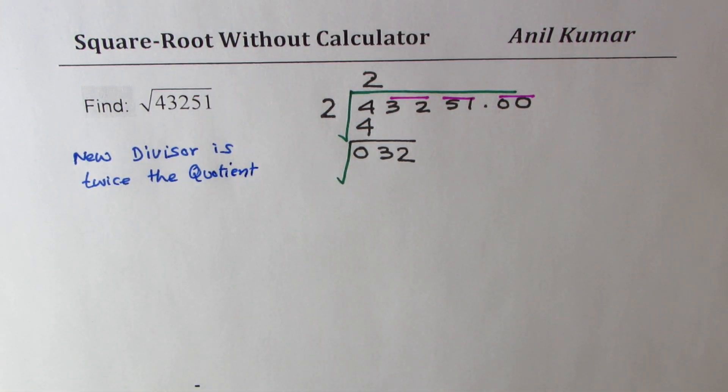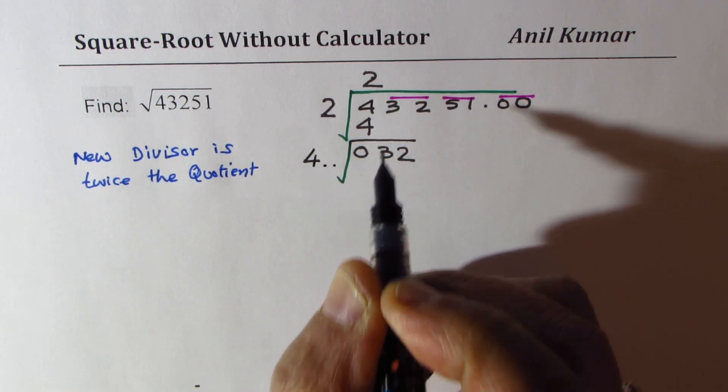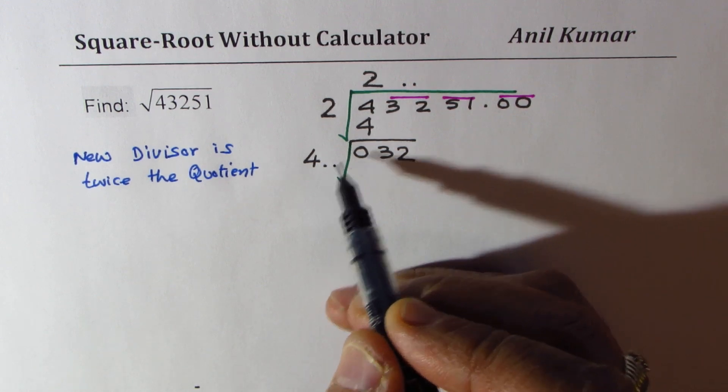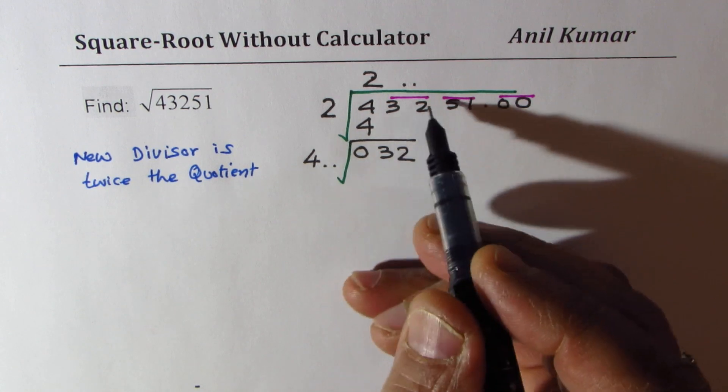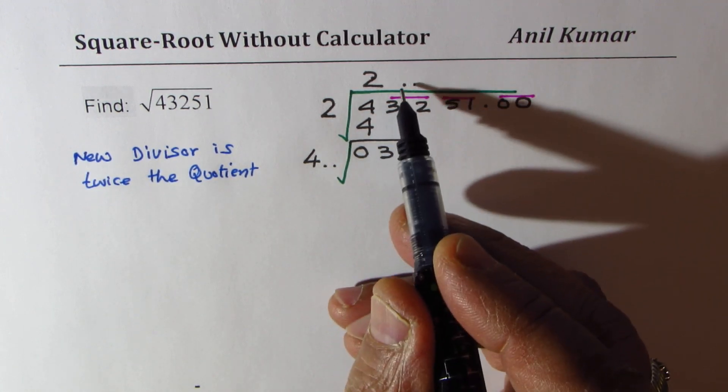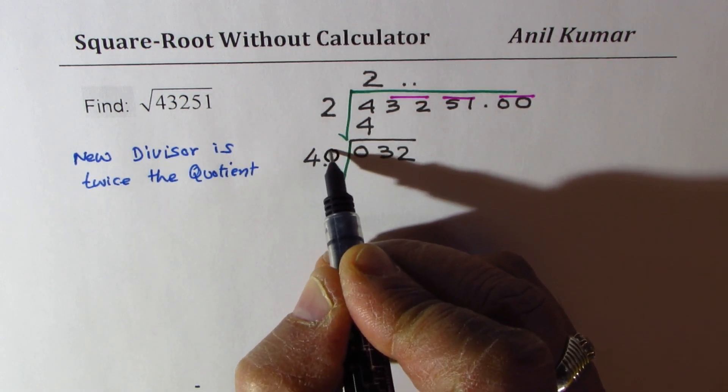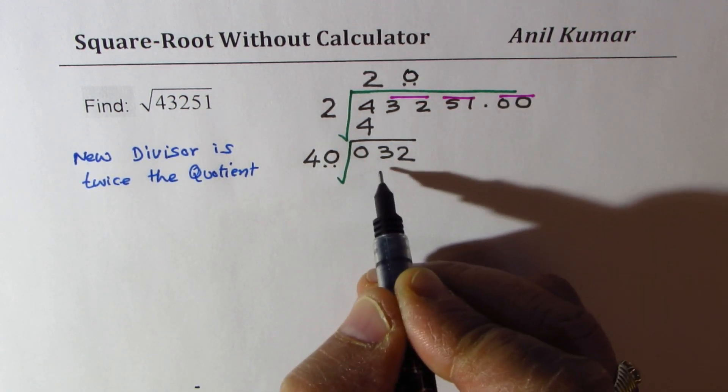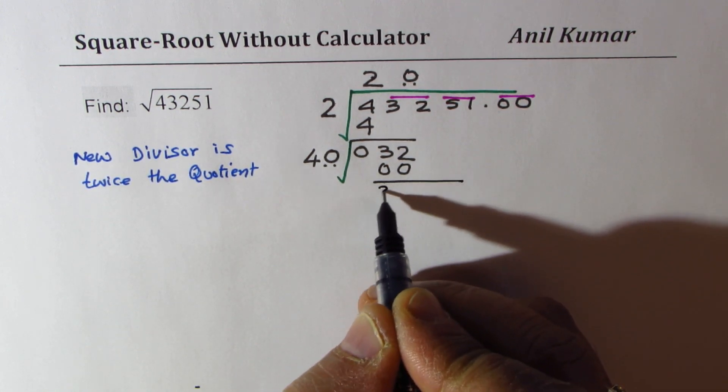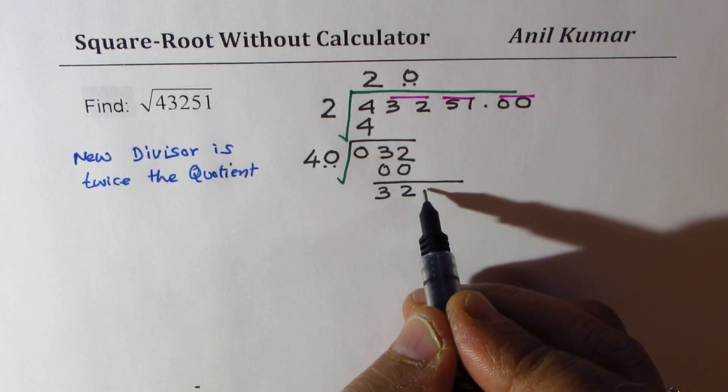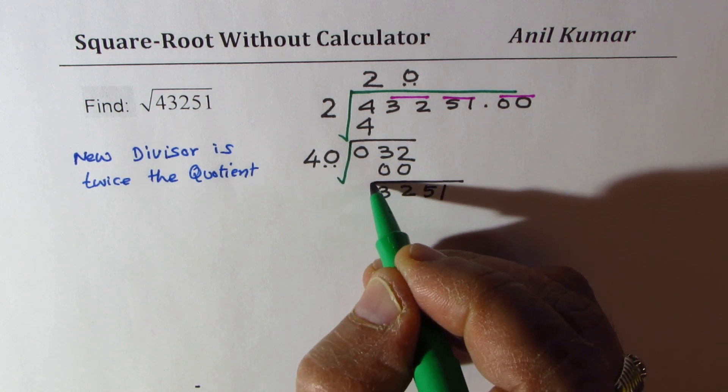So in our case, quotient is 2. Divisor is going to be 4. And now we have to introduce the number here. These two numbers have to be exactly same. What could go here and there both places? If I write 1, I get 41 which is greater than 32, so I have no option other than placing a 0. Placing 0 gives me 0 here. So the remainder is now 32. Bring down the next set which is 51 and again perform this special division.